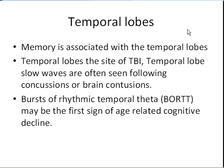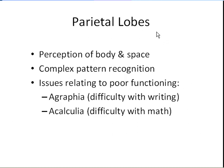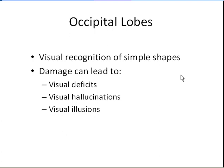The temporal lobes assist us in making permanent memories, along with the hippocampus, which is a deeper brain structure. Damage to the temporal lobes often occurs with traumatic brain injury, such as a car accident. EEG slowing, such as delta and theta, occurs. Bursts of rhythmic temporal theta often occur when there is age-related cognitive decline. The parietal lobes help us make sense of our body in space and assist in complex pattern recognition. When the parietal lobes are operating poorly, there may be difficulties with writing, math, and spelling. The occipital lobes help us recognize simple shapes. Damage can lead to deficits in visual acuity, hallucinations, or illusions.